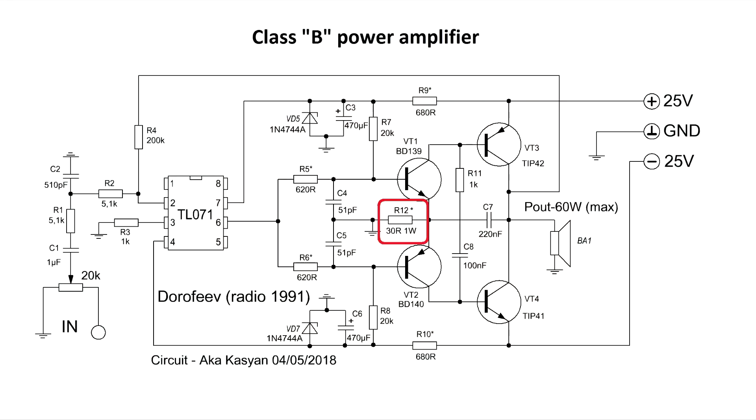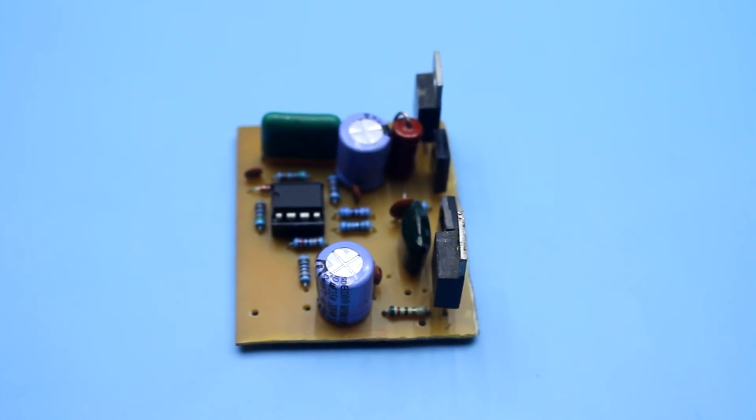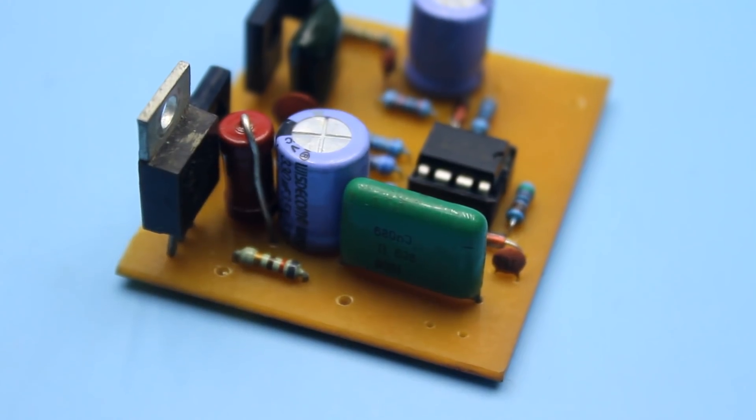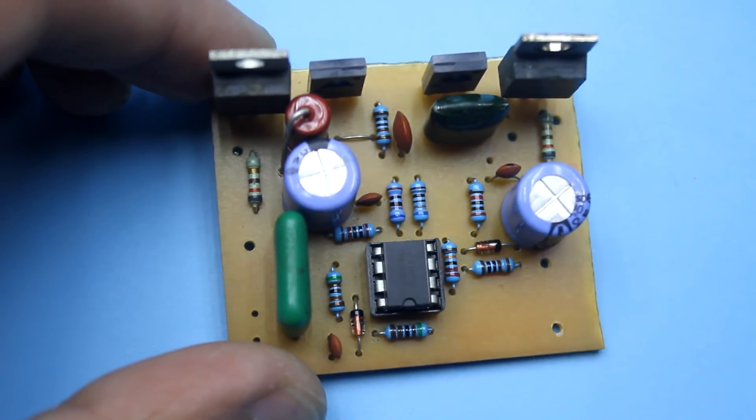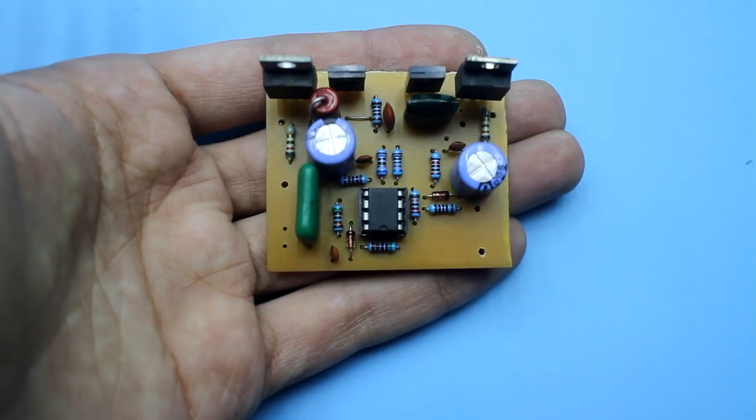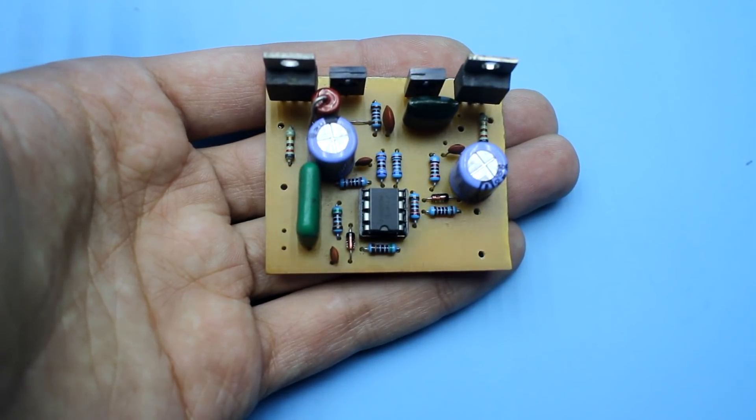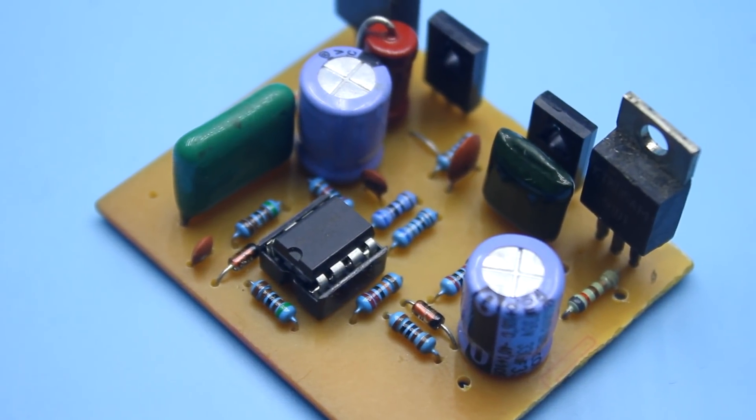The resistor preferably must have a power of 1 watt, but in extreme case it can be half a watt. The coefficient of non-linear distortion at a frequency of 1 kHz isn't more than 0.1% and at 20 kHz less than 0.2%, so that no distortion is heard at nominal power.